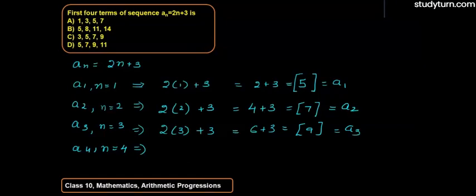And now, for the fourth term, that is a4, let us put here the value n equals to 4. What do we get? We get here 8 plus 3, that is equal to 11. So our fourth term is 11.